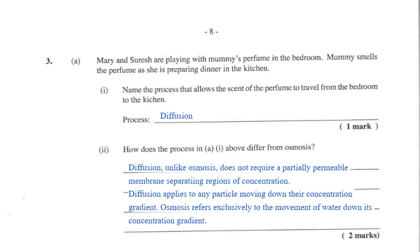As we see here, Mary and Suresh are playing with Mummy's perfume in the bedroom. Mummy smells the perfume while she's preparing dinner. So let's go to the first part of the question. It's asking us to name the process, and of course that process is diffusion.